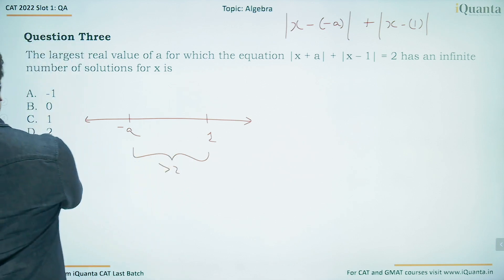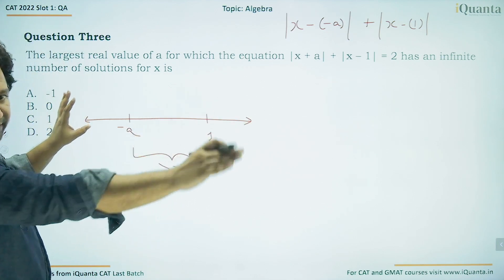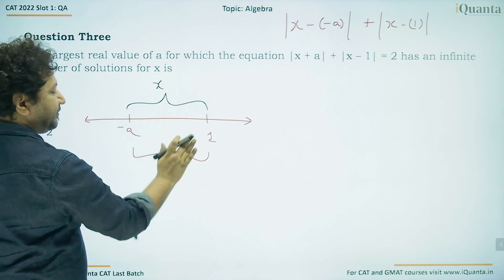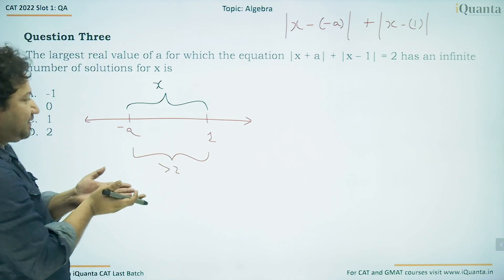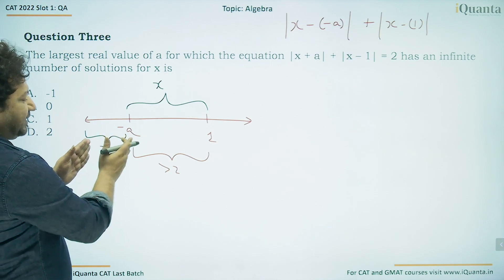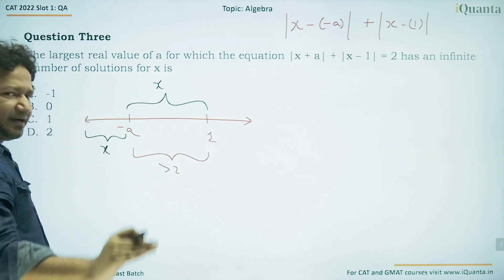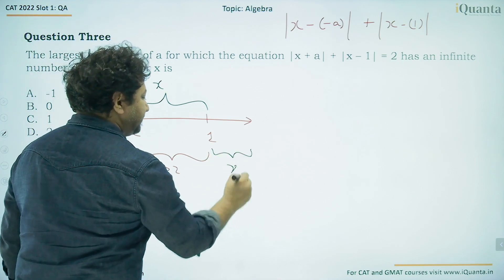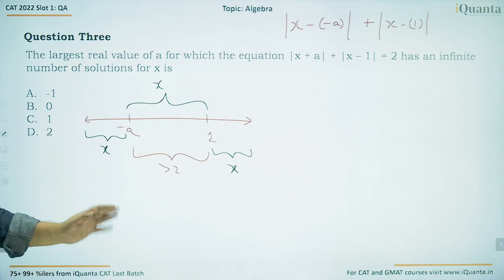In the first case, if the distance between −a and 1 is greater than 2, then wherever you put x — whether between them or outside — the sum of distances will always exceed 2 or fail to equal 2. So this case is not possible and is automatically eliminated.